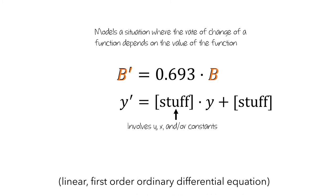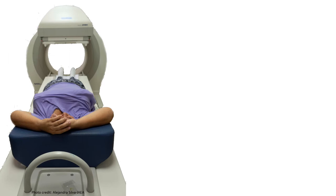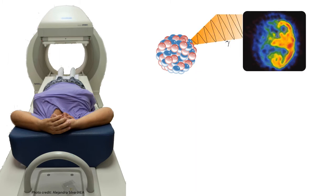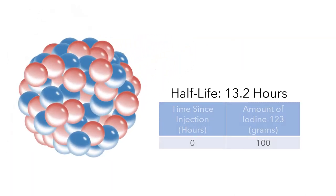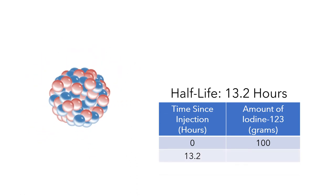Let's look at another example. In single photon emission computed tomography, patients are injected with a radioactive isotope of iodine. When it decays, it emits radiation, which is used to visualize structures within the body. The iodine has a half-life of 13.2 hours, meaning that half of the iodine left in the body decays in 13.2 hours. For example, if we injected a patient with 100 grams of iodine, after 13.2 hours there would only be 50 grams left.